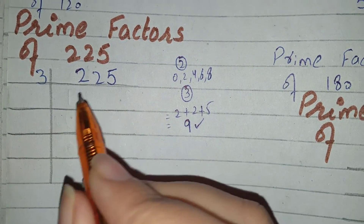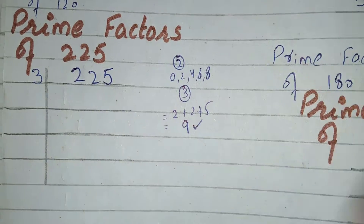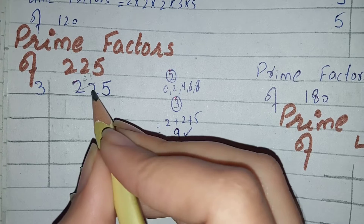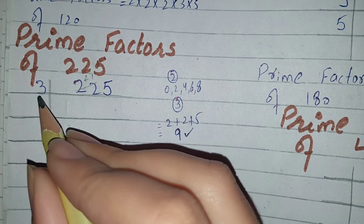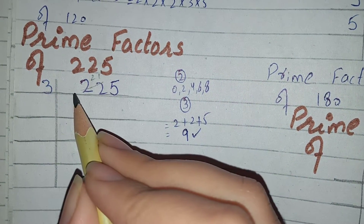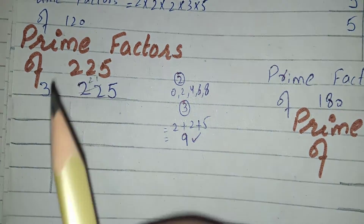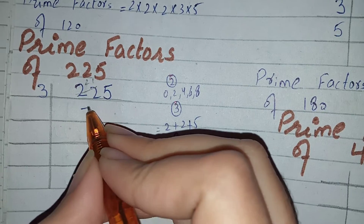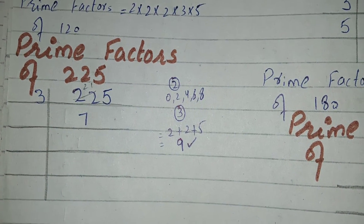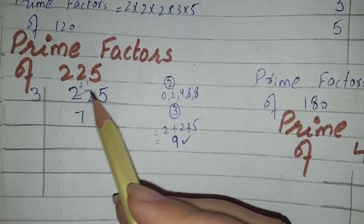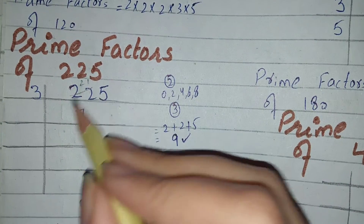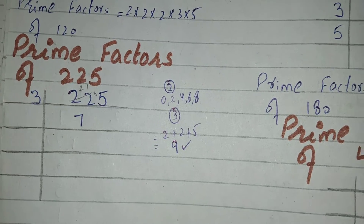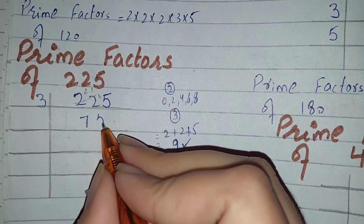We will take 3 here. If you know the answer directly, write it; otherwise, cut 22 and make it 21 because 22 is not divisible by 3. 3 sevens are 21. When I cut 22 and make it 21, the remainder shifts here — that is 1 — and it becomes 15. 3 fives are 15.